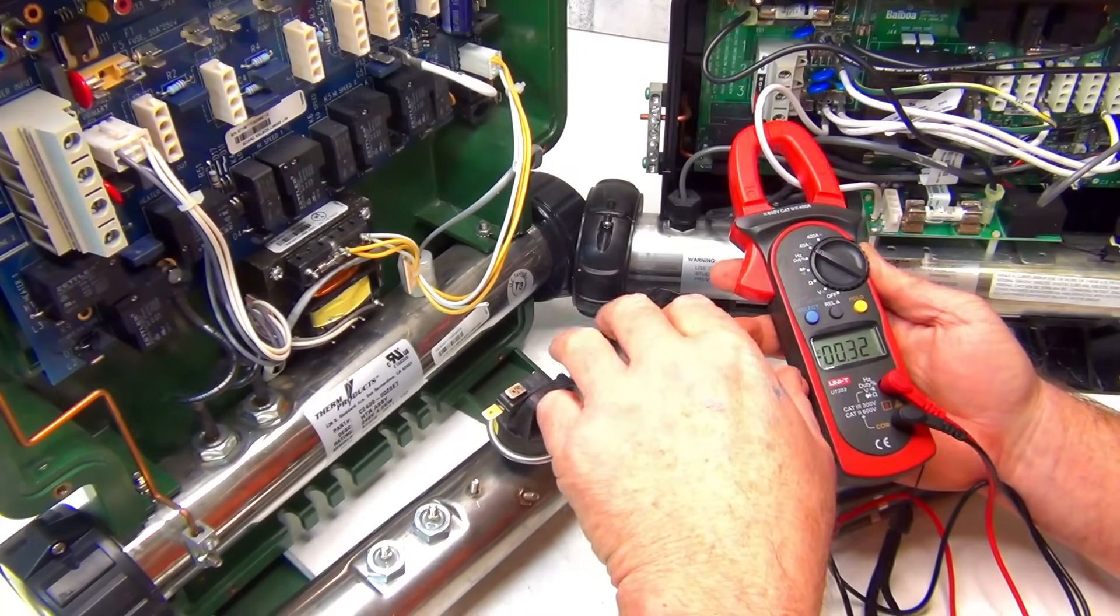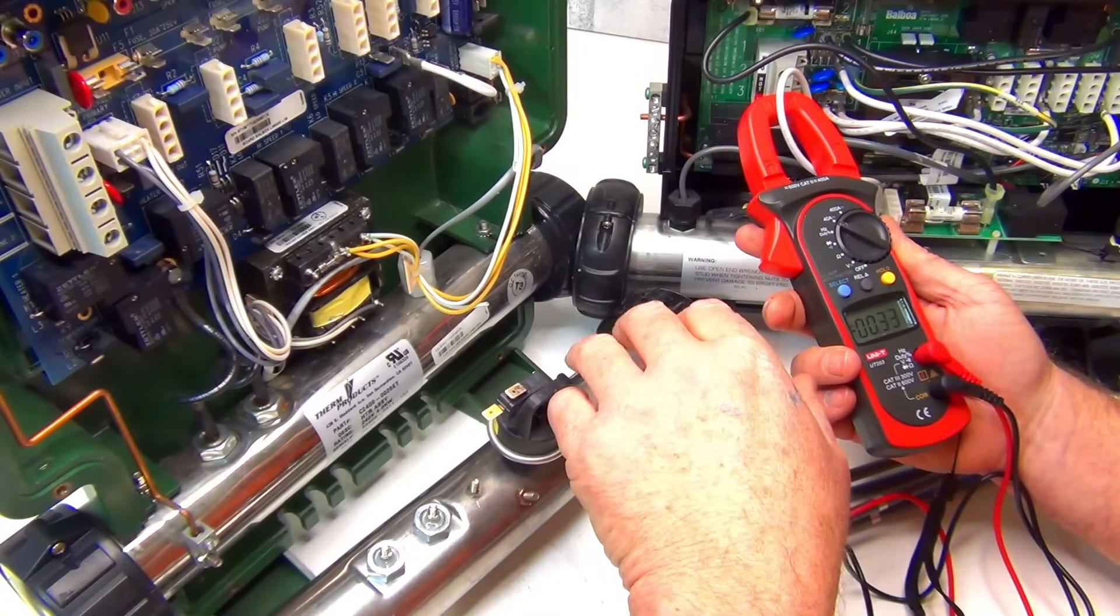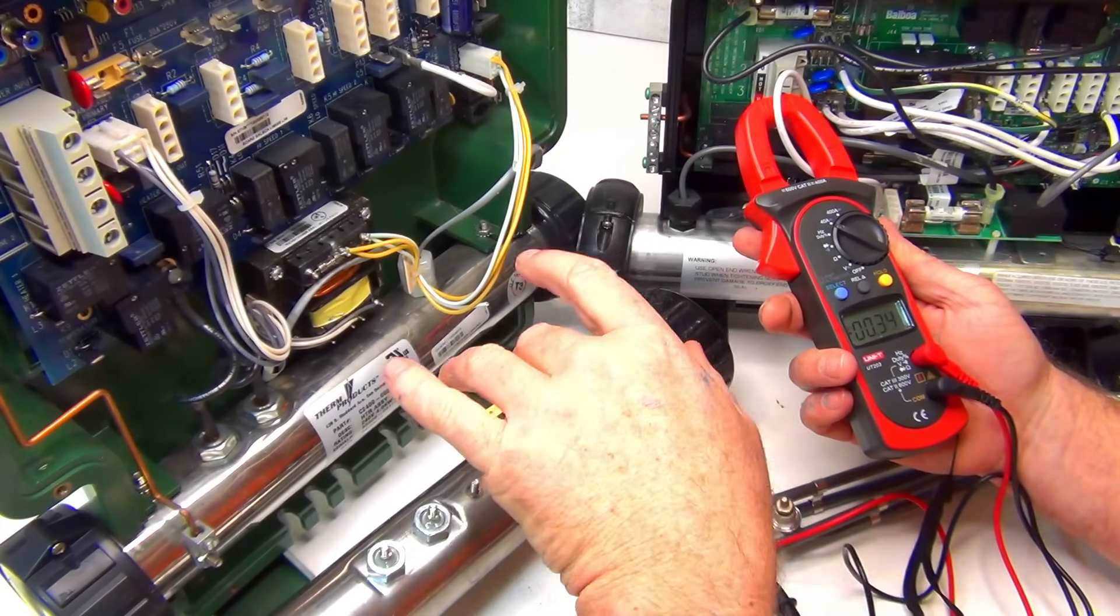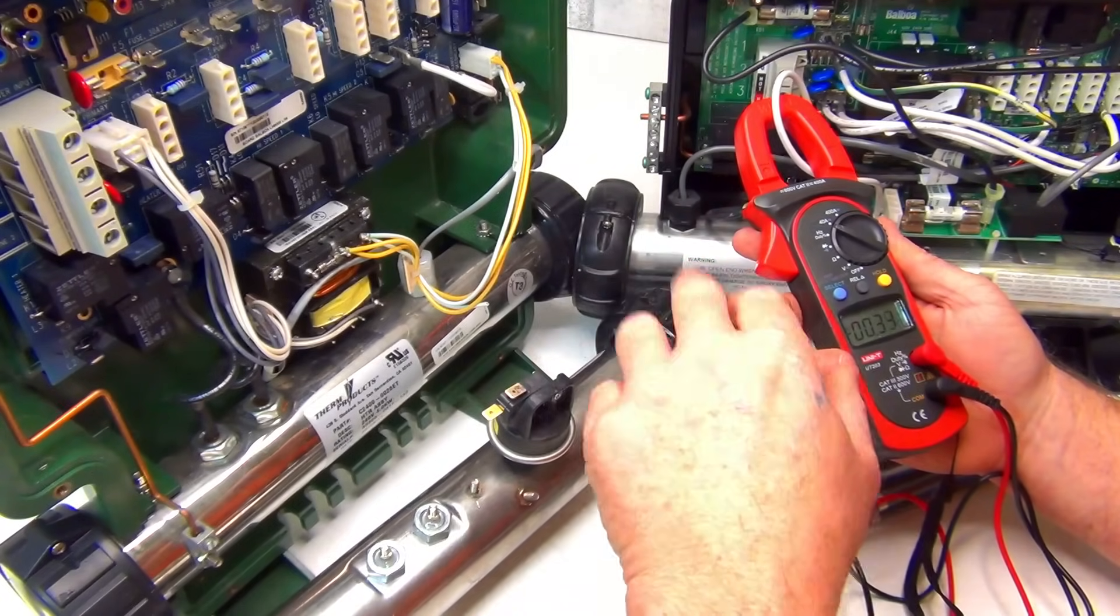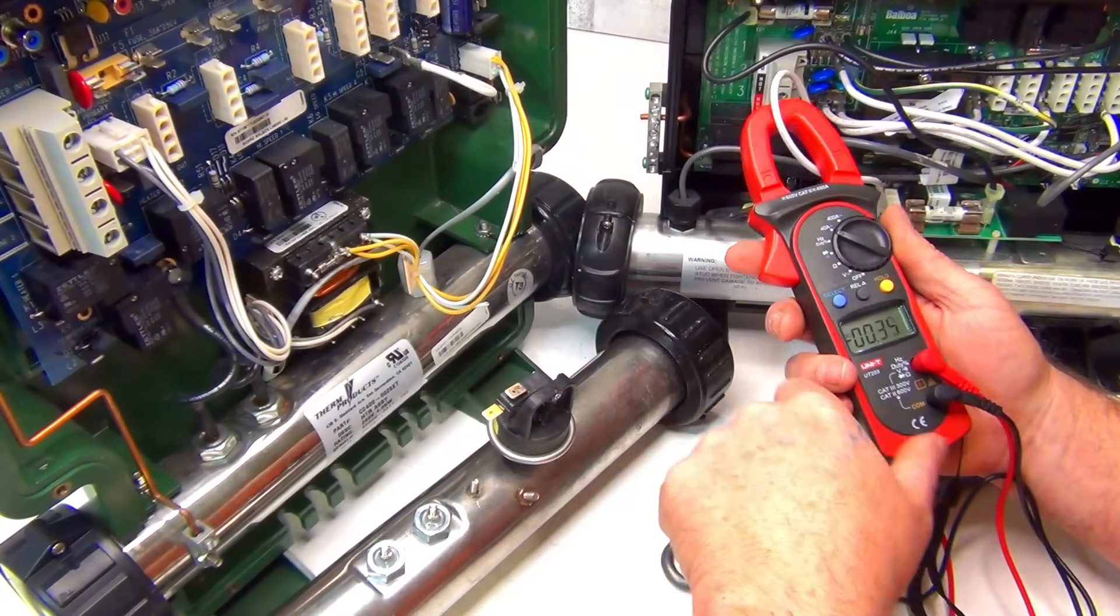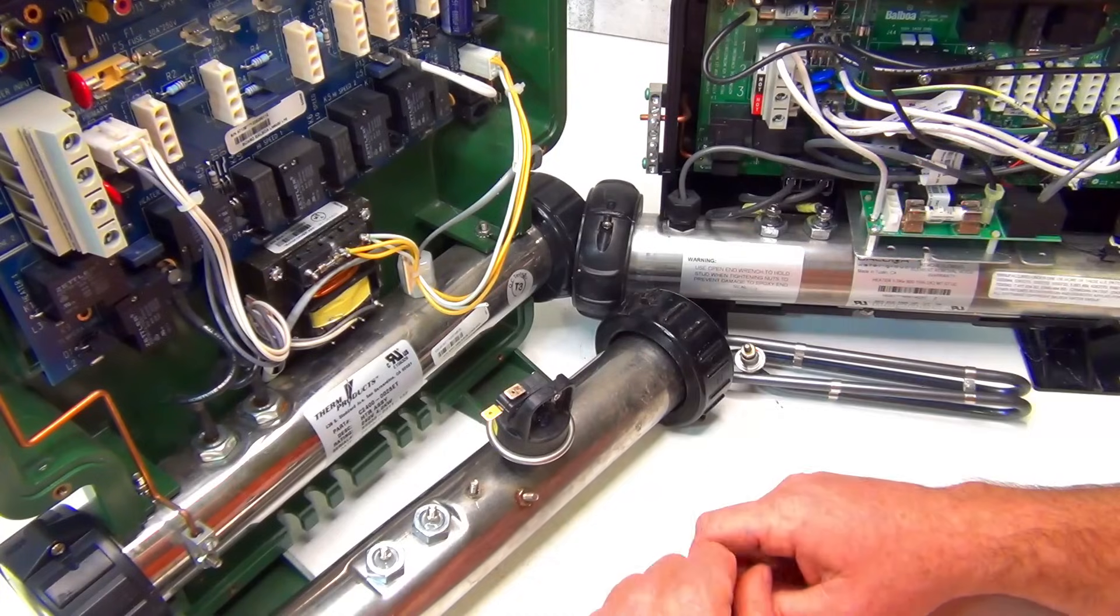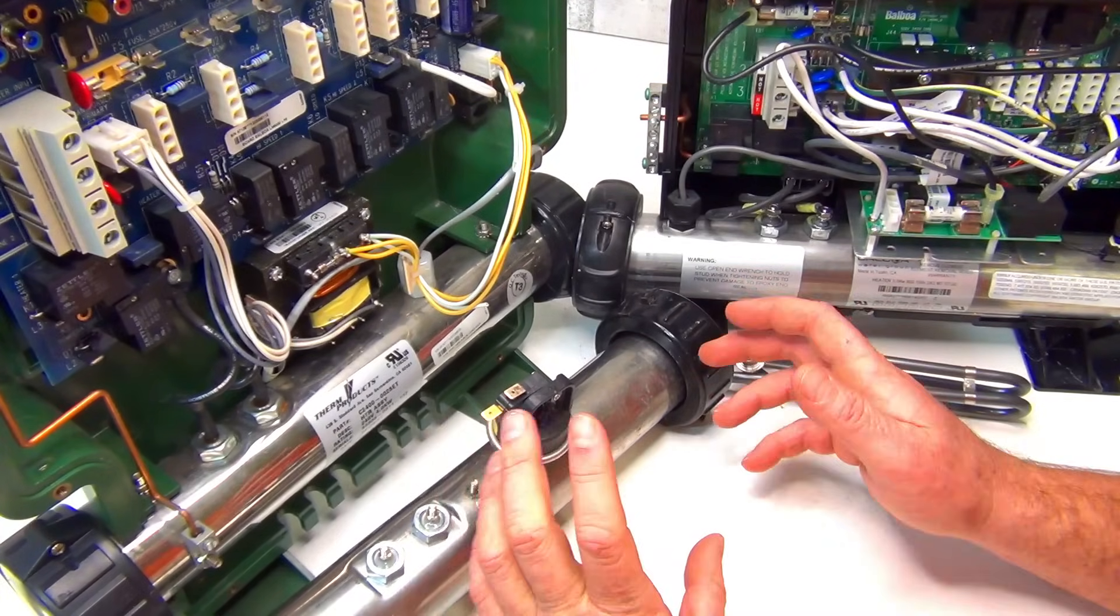And it'll give you an idea. Even if you put it on there and you put high speed, high speed, low speed is going to be different amperage. So you can check that on your hot tub pump. So there's the four ways of testing your heater element.